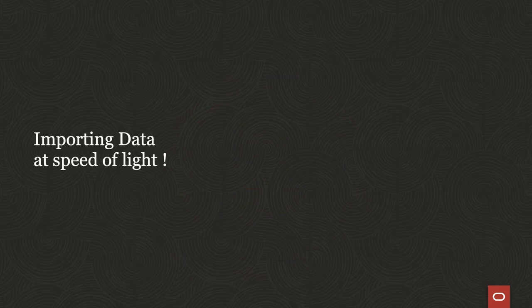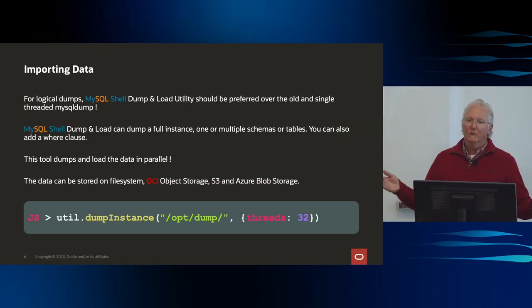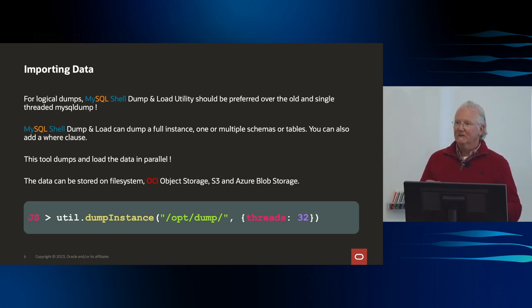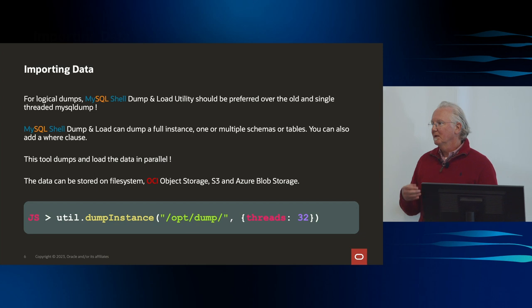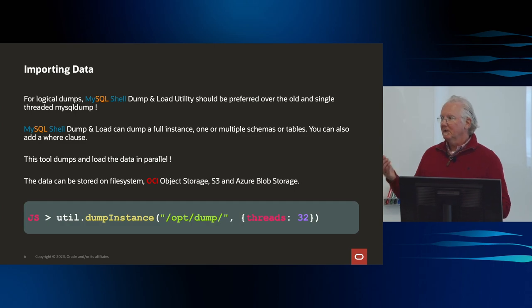Number one: importing at the speed of light. MySQL had MySQL dump — it's been around a long time, it's single-threaded, it's not that fast. We have MySQL Shell now. It's got an export and import utility. You can dump an instance, a table, or a schema, and you can determine how many threads it uses, which will make it export faster. And you can do that to object storage of various flavors.